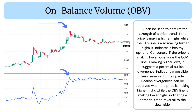OBV can be used to confirm the strength of a price trend. If the price is making higher highs while the OBV line is also making higher highs, it indicates a healthy uptrend. Conversely, if the price is making lower lows while the OBV line is making higher lows, it suggests a potential bullish divergence, indicating a possible trend reversal to the upside.